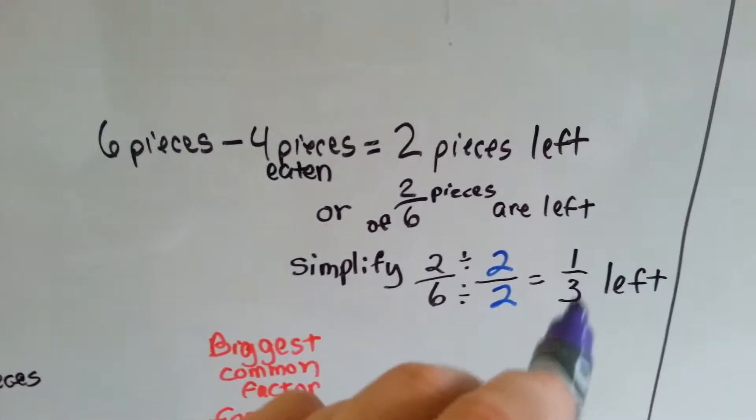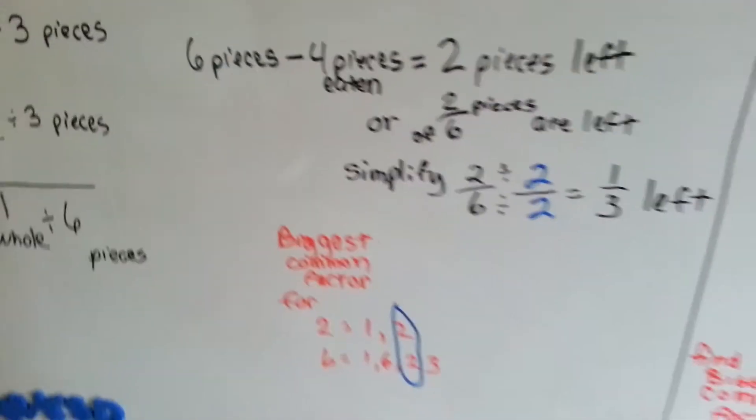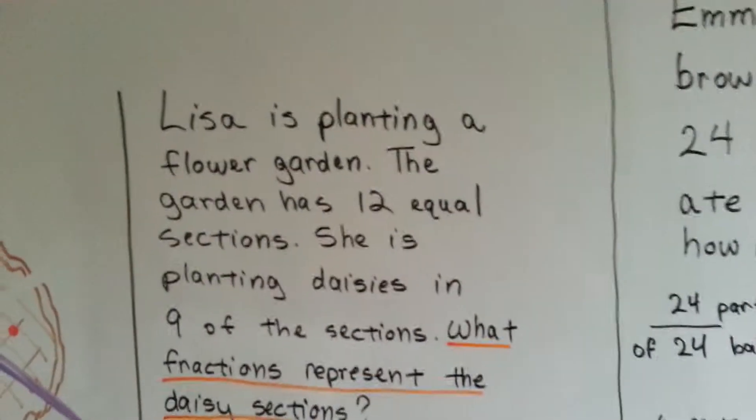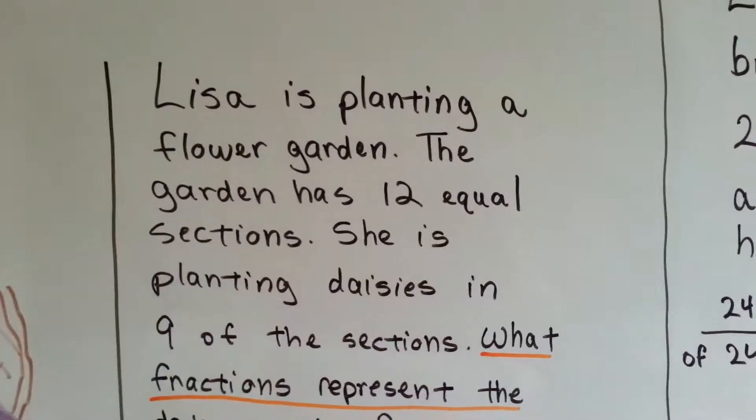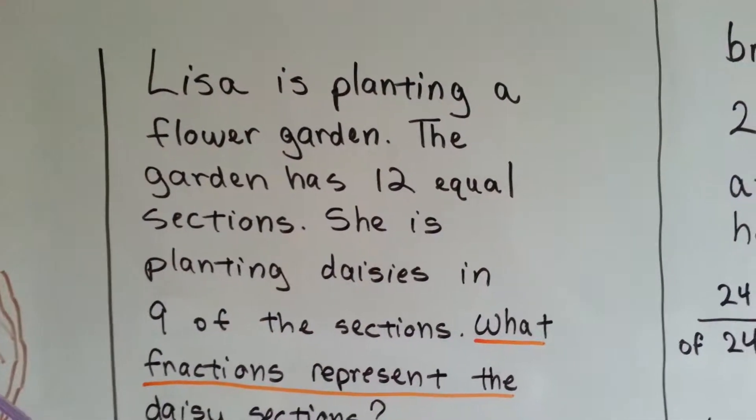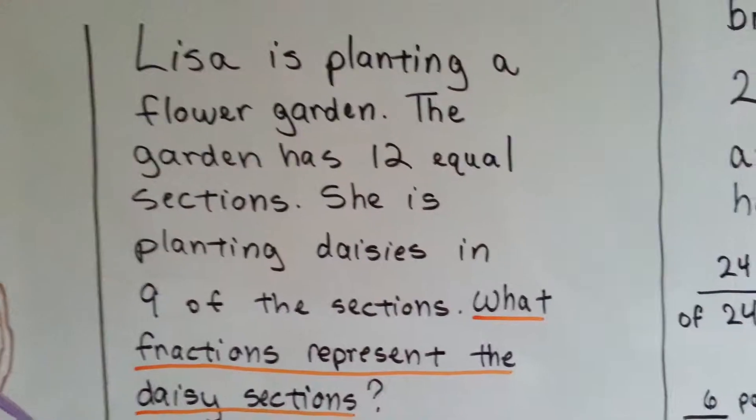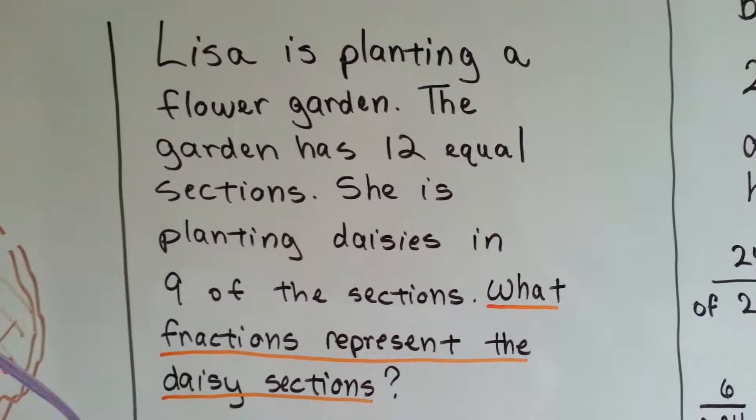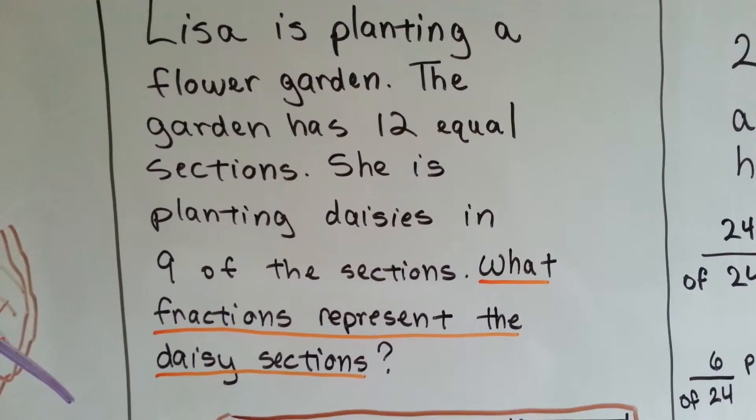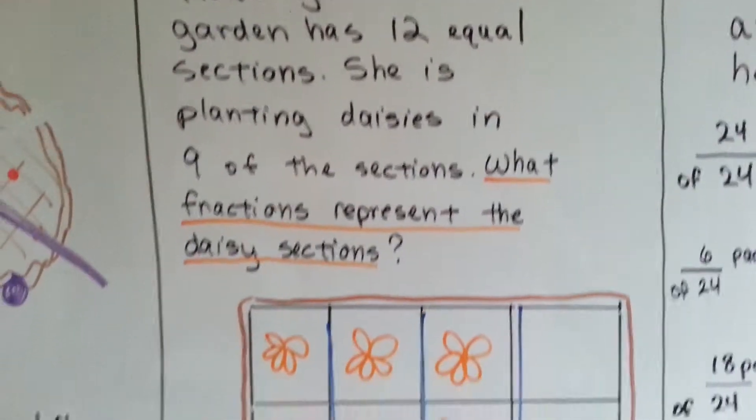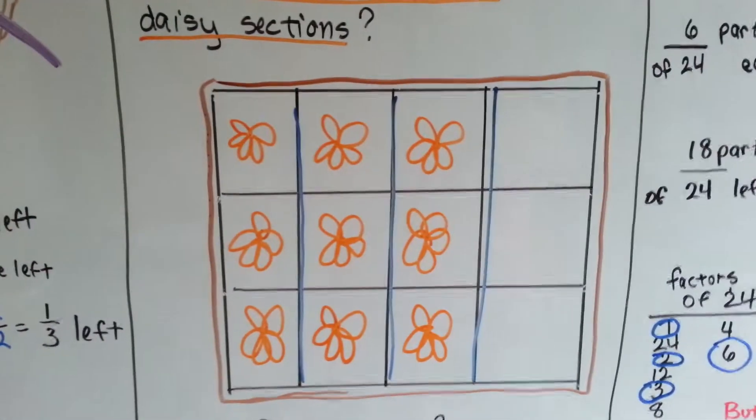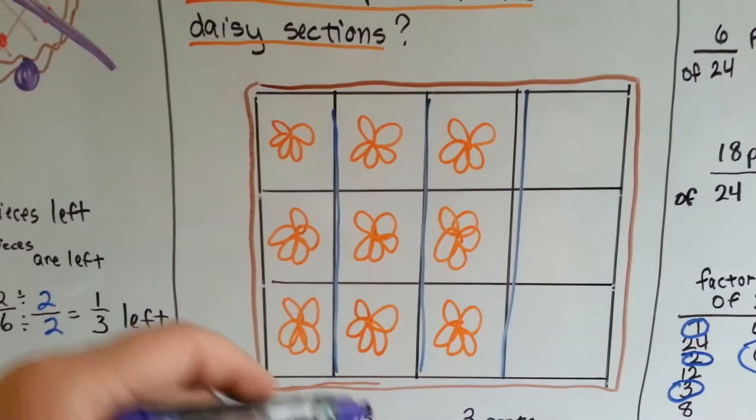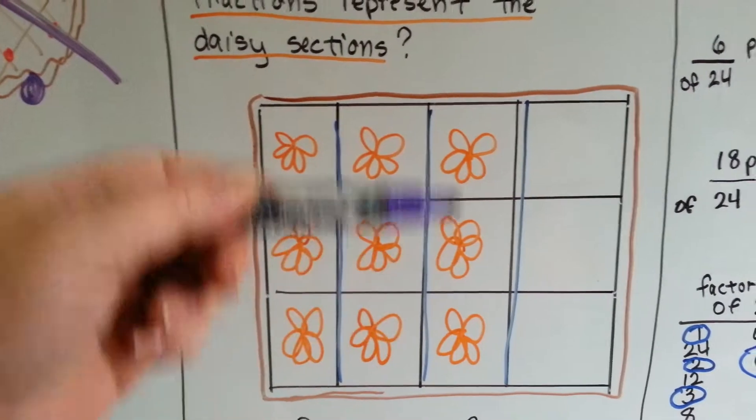So two sixths is equal to one third when you get the common factors and reduce it. Simplify it. Let's see what Lisa's doing. She's planting a flower garden and it has twelve equal sections. She's planting daisies in nine of the sections. We draw our garden. We've got our twelve sections.